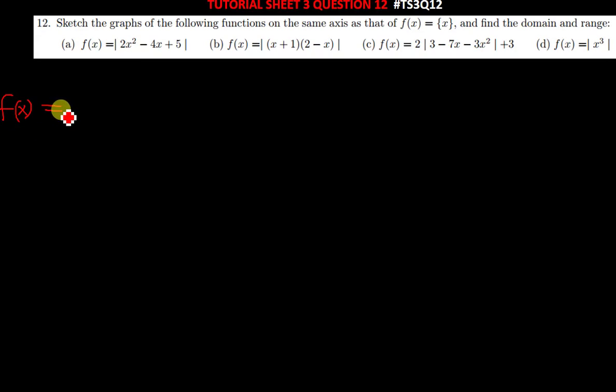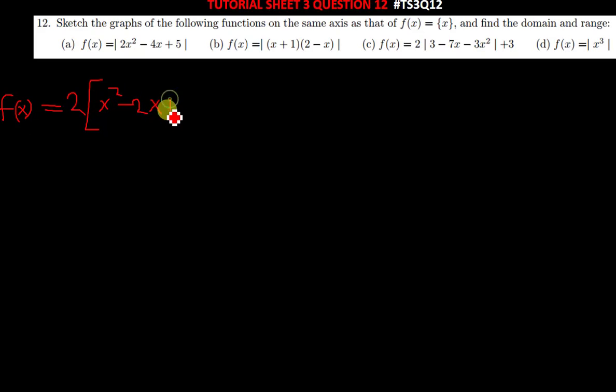To solve this equation, we first have to complete the square. If you factor out the 2, you're going to remain with x squared minus 2x plus 5.